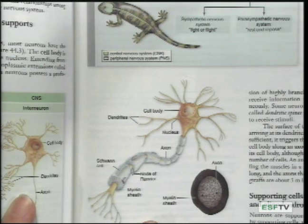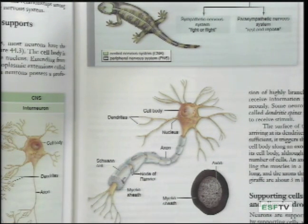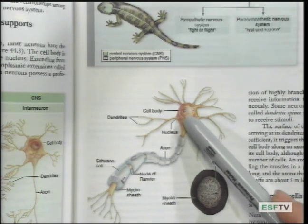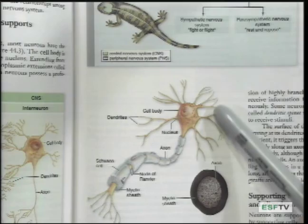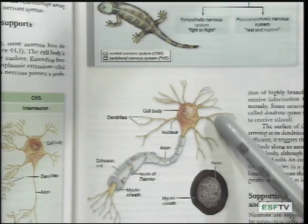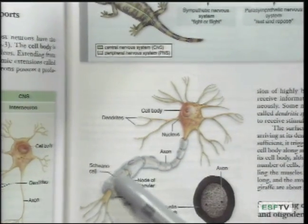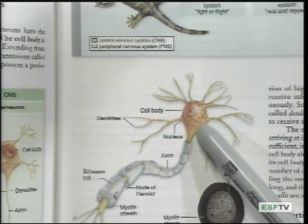Most neurons have the same basic structure and they consist of three parts: the nerve cell body, dendrites that receive sensory information, and an axon that leads away from the nerve cell body.